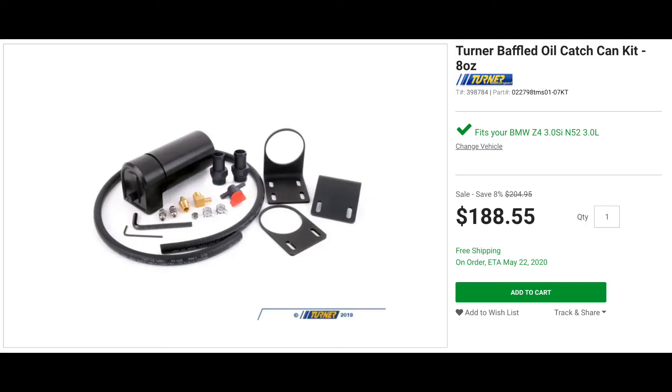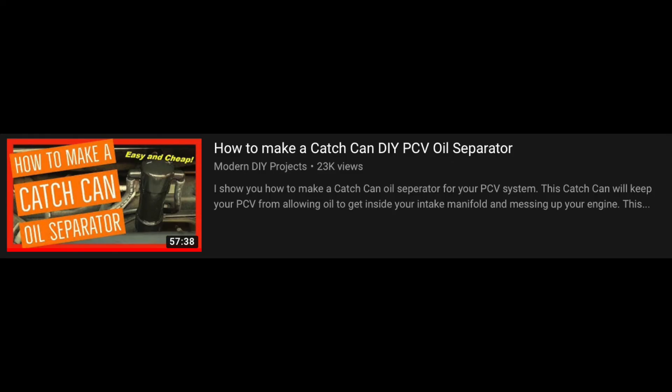And the last thing is the catch can. I just have shown here the Turner Motorsport one, which is almost $200. You can buy one of the cheap $15 ones off of eBay or Amazon. You can buy one for about $50 or $100. You can buy one for $400. They all do about the same. You can really even make your own out of PVC pipe. I've seen that before and it works pretty much just the same. This is more of an aesthetic taste or a financial decision depending on what you can afford.